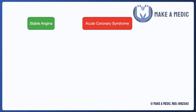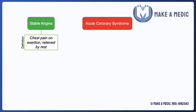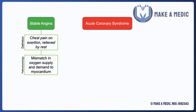Stable angina is defined as chest pain on exertion that is relieved by rest, and it is quite simply caused by a mismatch in the oxygen supply and demand of the myocardium. This tends to be due to a narrowing in the coronary blood vessels, typically due to atherosclerosis.